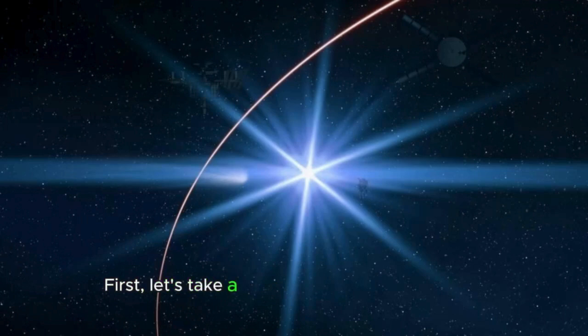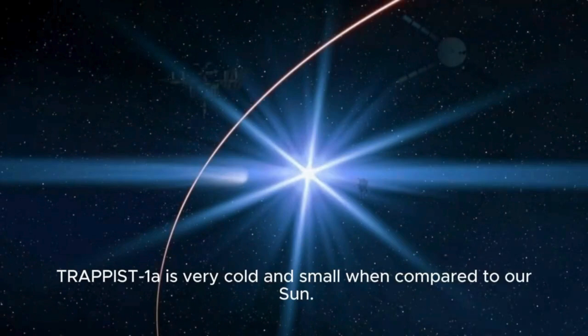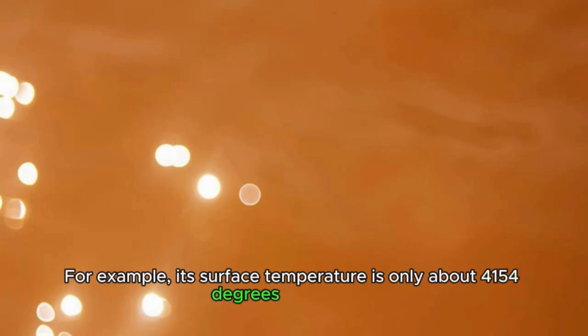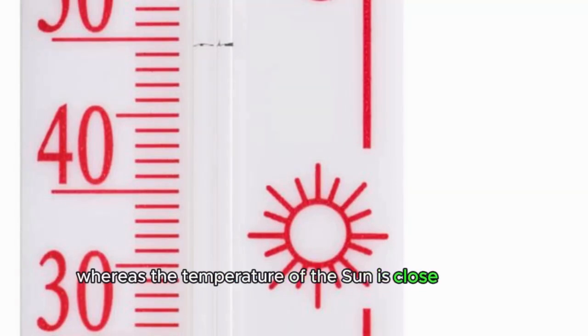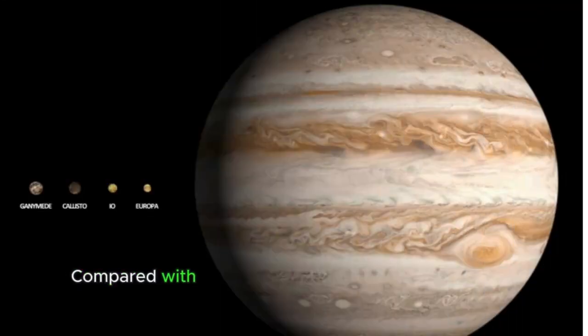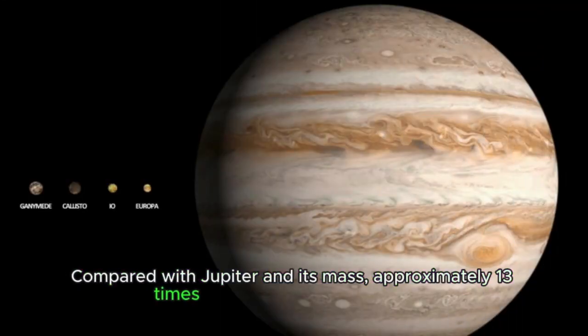First, let's take a closer look at the central star. TRAPPIST-1a is very cold and small when compared to our Sun. For example, its surface temperature is only about 4154 degrees Fahrenheit, whereas the temperature of the Sun is close to 9930 degrees Fahrenheit. Its size can be compared with Jupiter and its mass, approximately 13 times smaller than the Sun's mass.